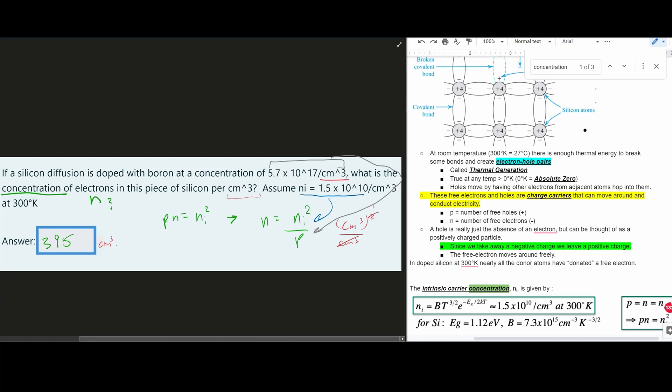It's always important to pay attention to units. Also, make sure that you know, when we read this, if a silicon diffusion is doped with boron at a concentration of this value, this is our P value. The P is the number of free holes that our boron has. That's what it's going to give us.